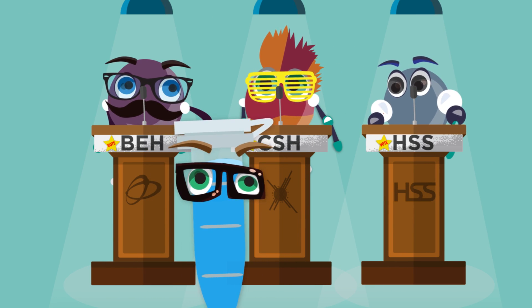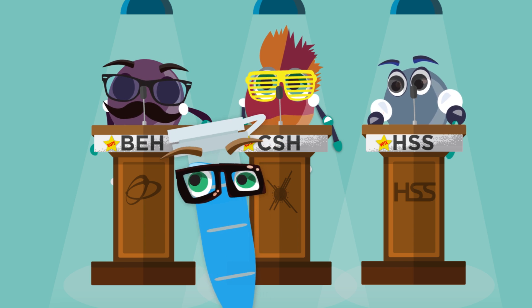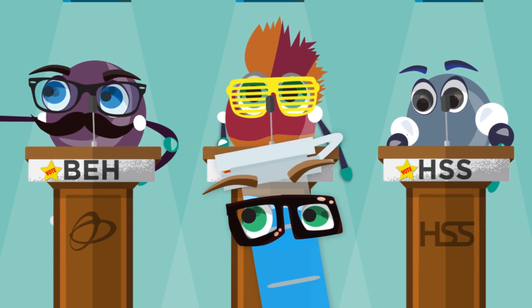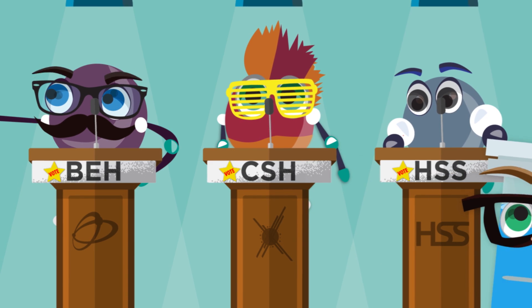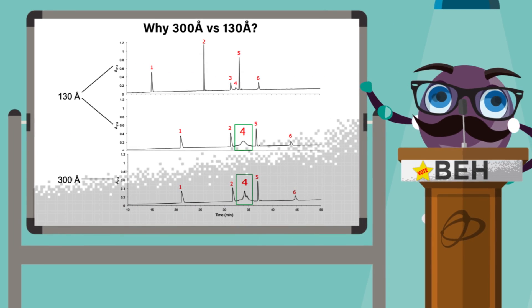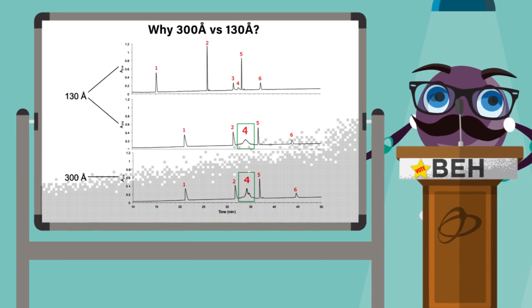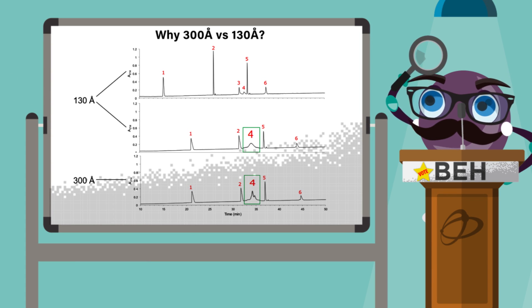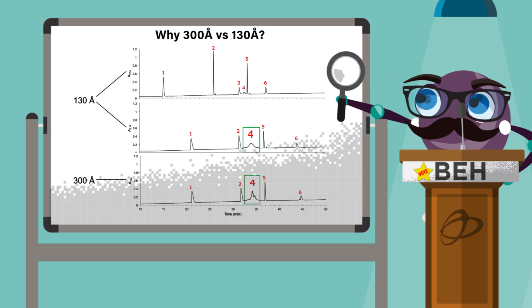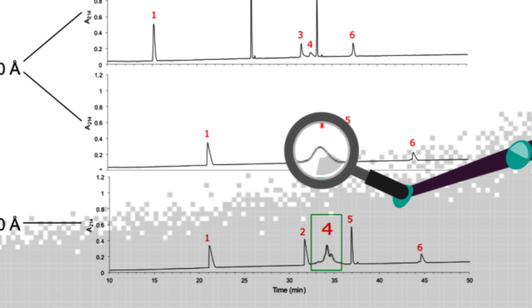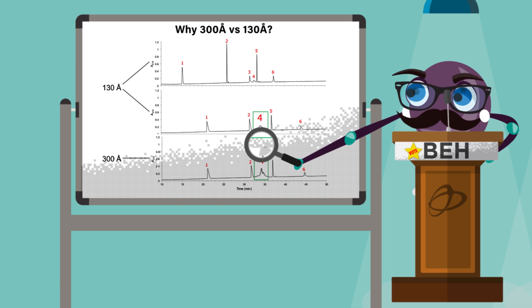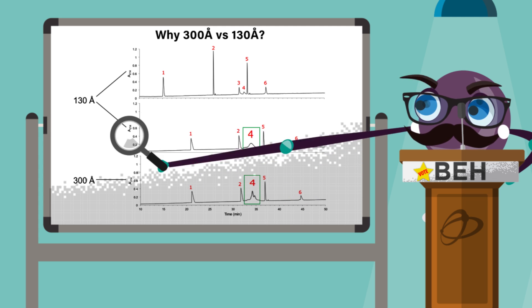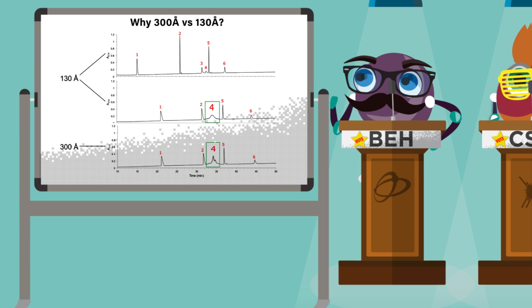So what about large peptides, like those generated from Lys-C digests that are over 6,000 daltons in molecular weight? If peptides are larger, I have a larger 300 angstrom pore size that can deliver extra resolution and improved recovery for these larger sized peptides. Look at this example using 6 peptides of varying molecular weights — see how the 300 angstrom pore size is capable of resolving the largest peptide into multiple peaks.